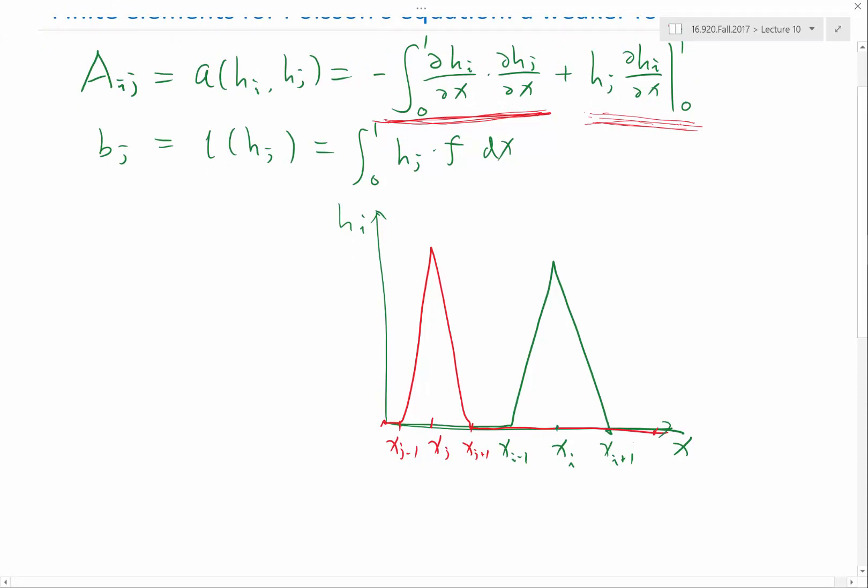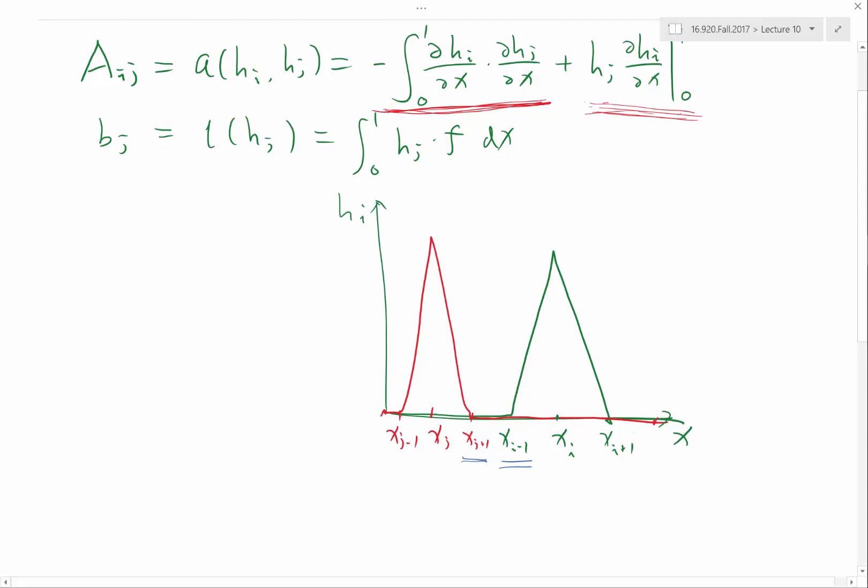So can somebody summarize the cases in which the first term would not be zero? When i minus j is 1? Yes. When the difference between i and j is less or equal to 1. If they are off by 2, then this xj plus 1 would be exactly equal to xi minus 1. And they miss each other exactly. So when they are off by 2, this integral would be zero. And if they are off by 1, or if they are the same basic function, they won't be zero.